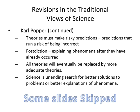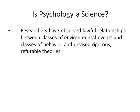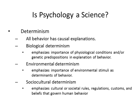All theories will eventually be replaced by more adequate theories. Science is an unending search for better solutions to problems or better explanations of phenomena. Our next topic is: is psychology a science? Researchers have observed lawful relationships between classes of environmental events and classes of behavior, and devised rigorous, refutable theories. From that perspective, it's looking quite good for psychology being a science.